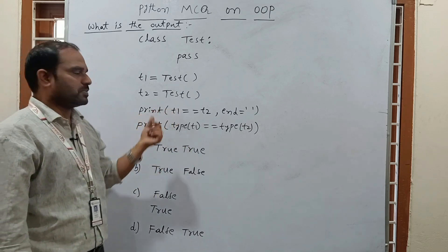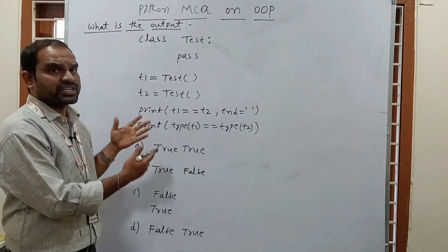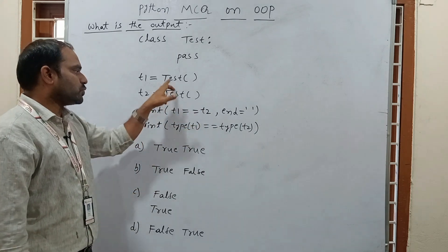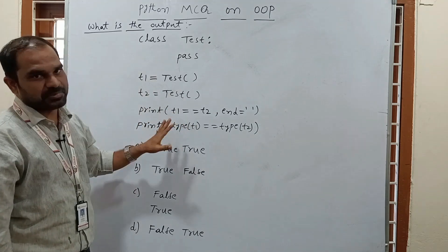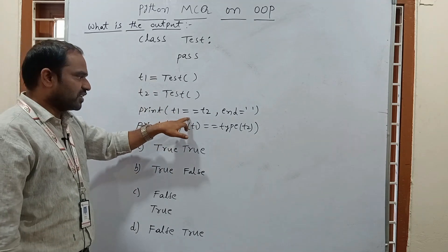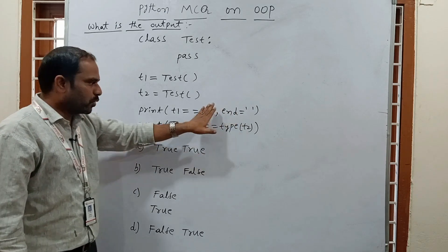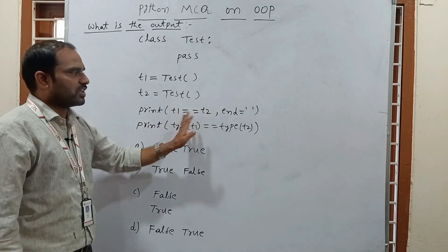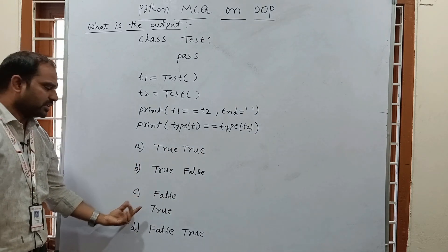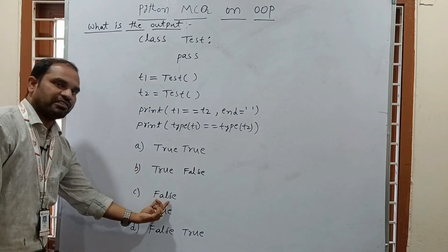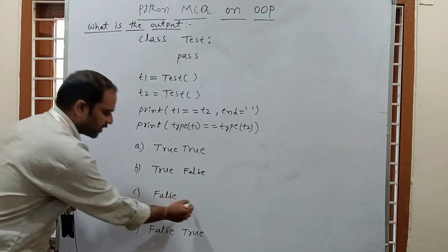What about the first print statement — T1 == T2? Are both objects the same? No. These two objects are different instances, even though both are created under the same class. That's why it returns false. Because 'end' is used, both results print on the same line: 'false true'.